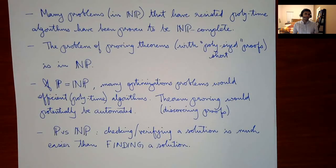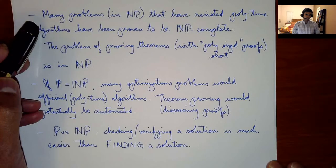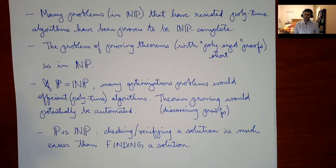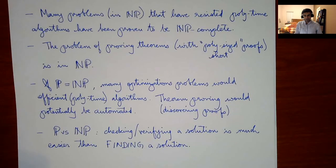These are some of the reasons why we believe that P is not equal to NP. Of course there are naysayers — some people challenge that and say just because you haven't found a proof, or just because there are so many problems we haven't been able to solve, doesn't mean there isn't some algorithm that exists. But this is some of the reasoning behind why we believe P is not equal to NP.